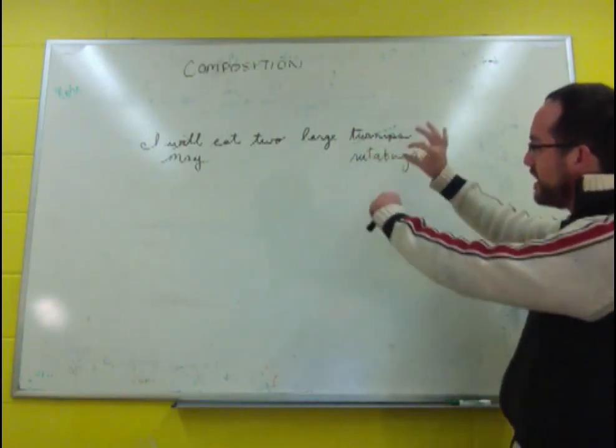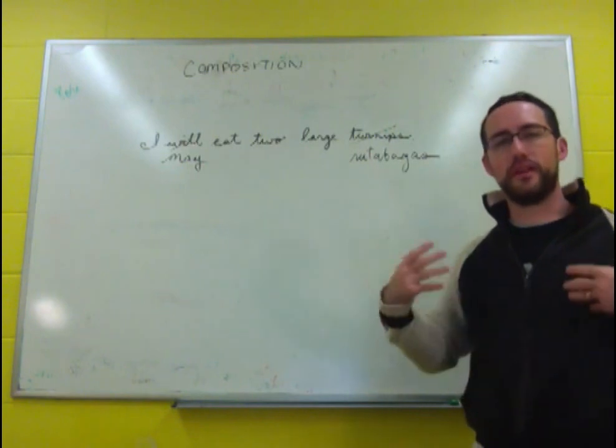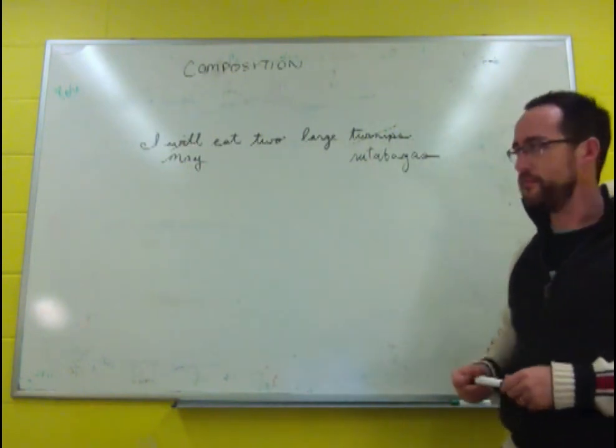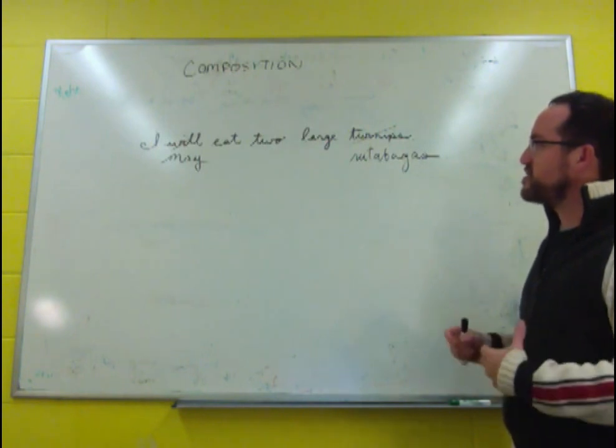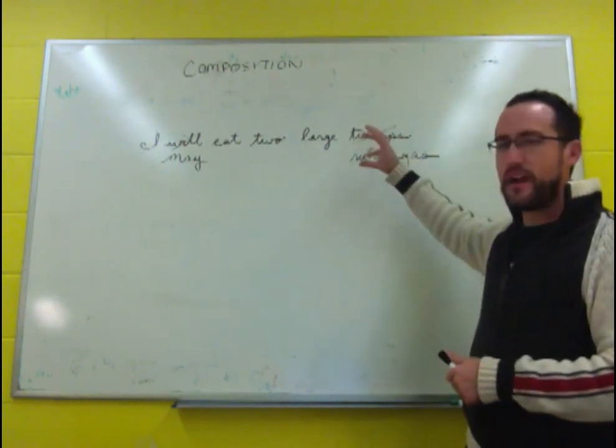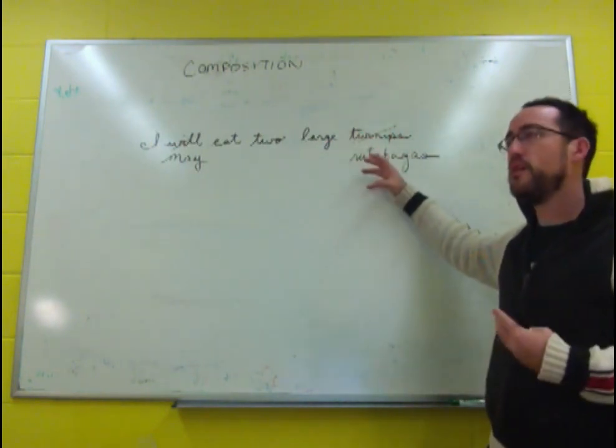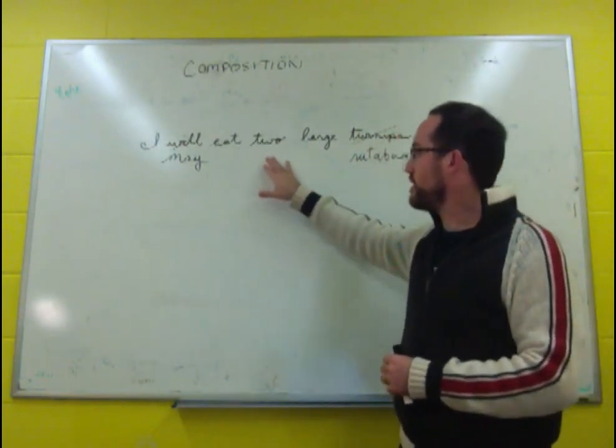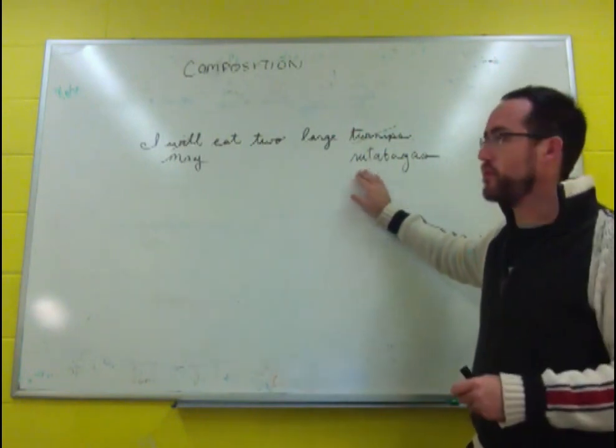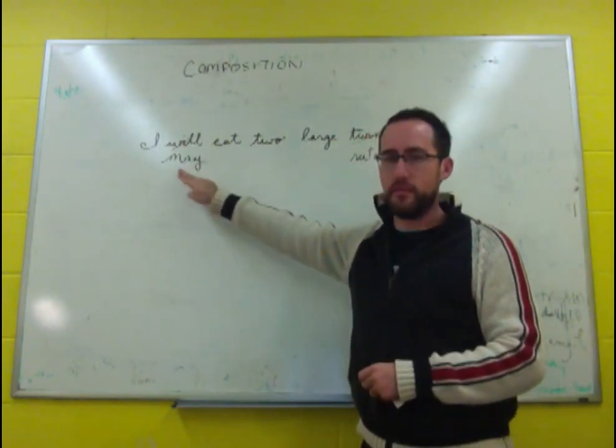Each change changes the sentence a little bit and we get a new proposition. So in that sense, composition allows us to understand how these things differ. We can use those differences to figure out what these morphemes mean, which is really important for the more abstract ones, like may.